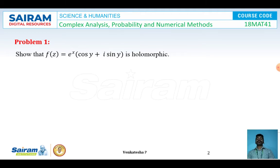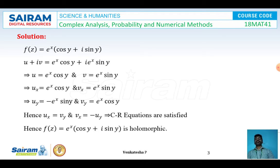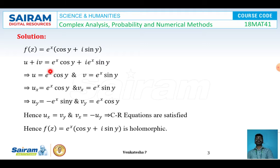Problem number one: show that f(z) = e^x(cos y + i sin y) is holomorphic. Holomorphic means the function has to be proven as an analytic function. We replace f(z) as u + iv, and expanding we get u + iv = e^x cos y + i·e^x sin y.